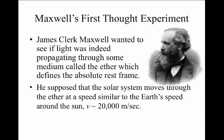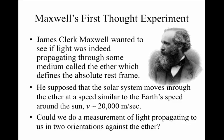He supposed that the solar system moves through the ether at a sort of astronomical speed similar to Earth's speed moving around the sun, which was known to be about 20,000 meters per second, or 20 kilometers per second. The question then remained, could one do a measurement of light propagating relative to the ether, using light going against the ether or with the ether, and observing a slight shift in the speed of light?